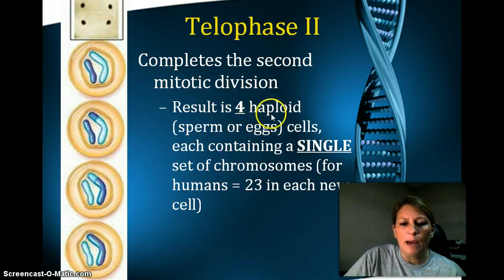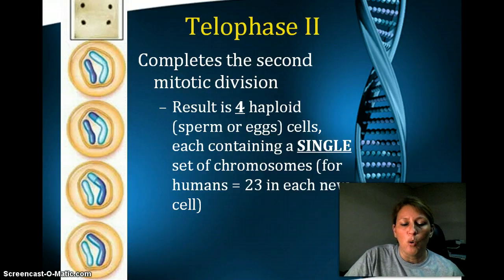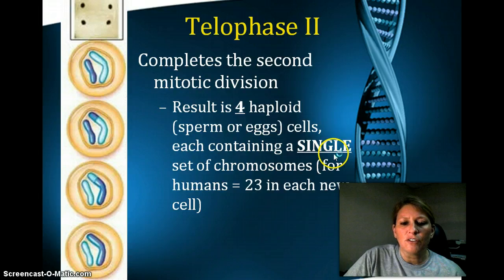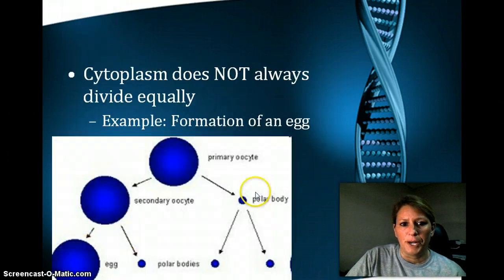The result is four haploid cells — haploid is a new word. Haploid means half the number of chromosomes. In this case, it would be sperm and eggs. From every one sperm, you can have four generated, and each one will contain a single set of chromosomes. So haploid — half the number of chromosomes — and in each case, humans would have 23.